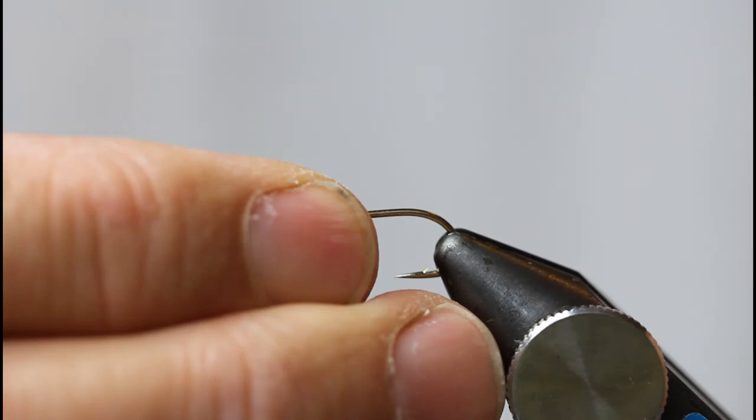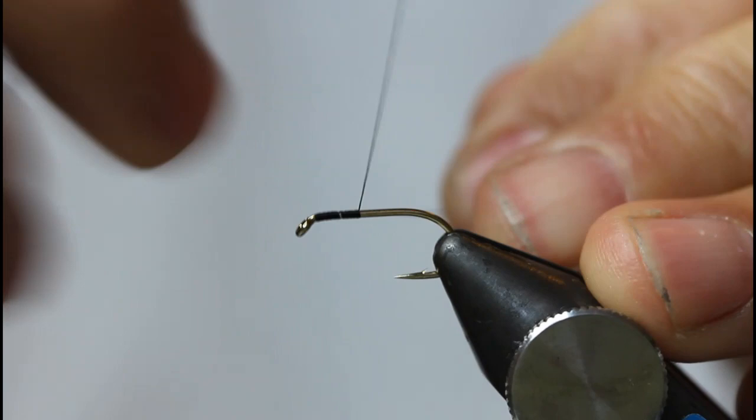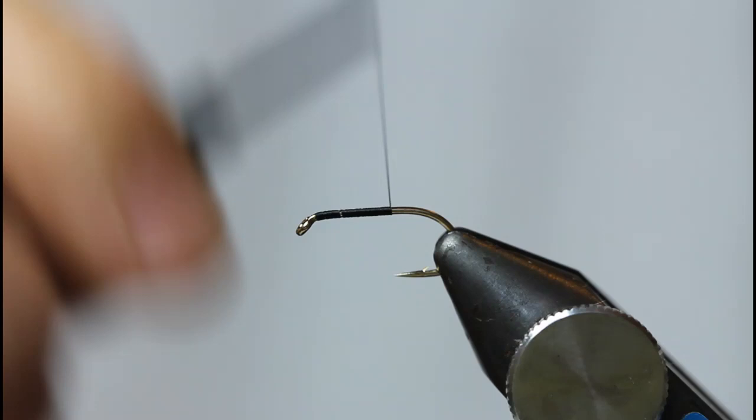In the vise I'm going to put a wet fly hook, that's a size 10. I've got an old black thread. I'm just going to come in and create a bed of thread, and I'm just going to come to a point opposite the hook point there.